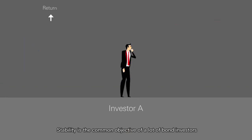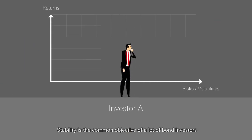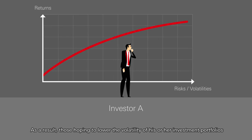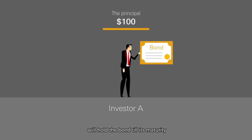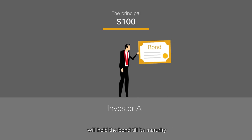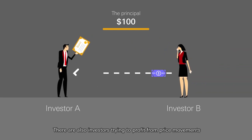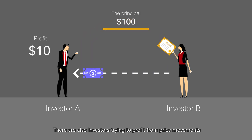Stability is the common objective of a lot of bond investors. As a result, those hoping to lower the volatility of their investment portfolios will hold the bond till its maturity. There are also investors trying to profit from price movements.